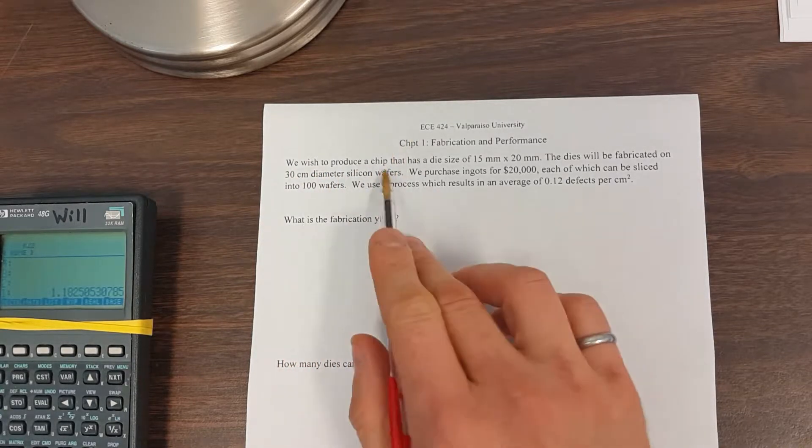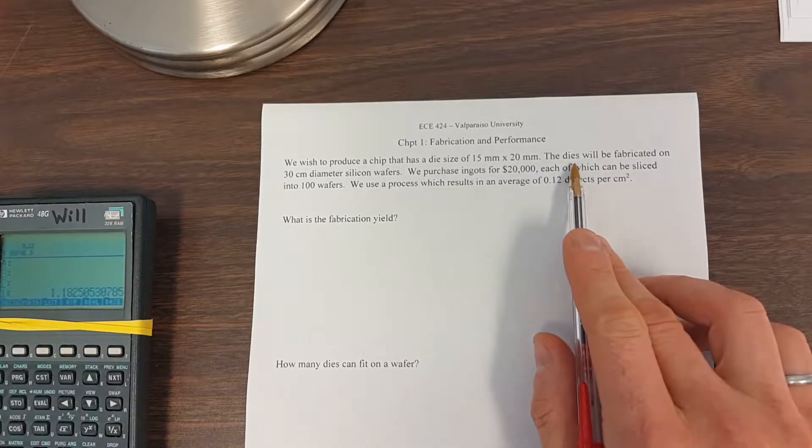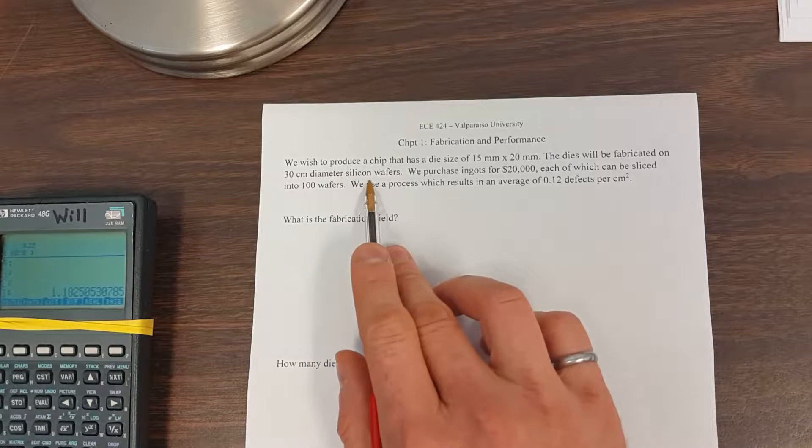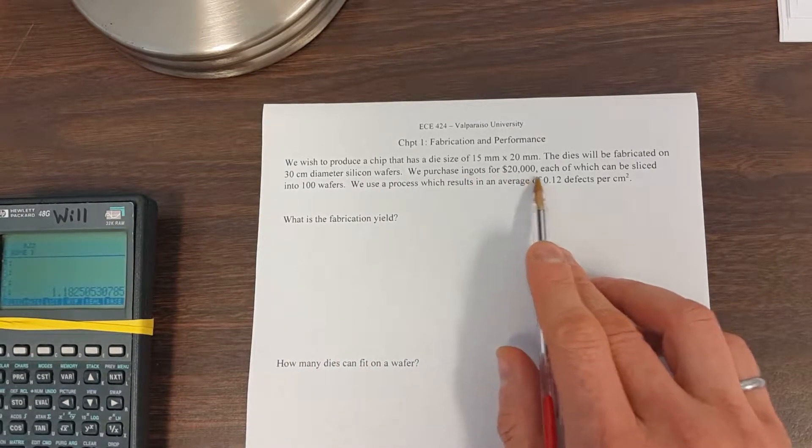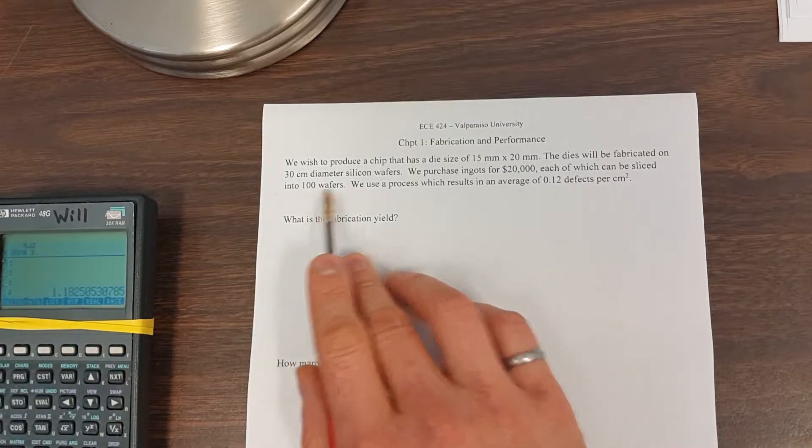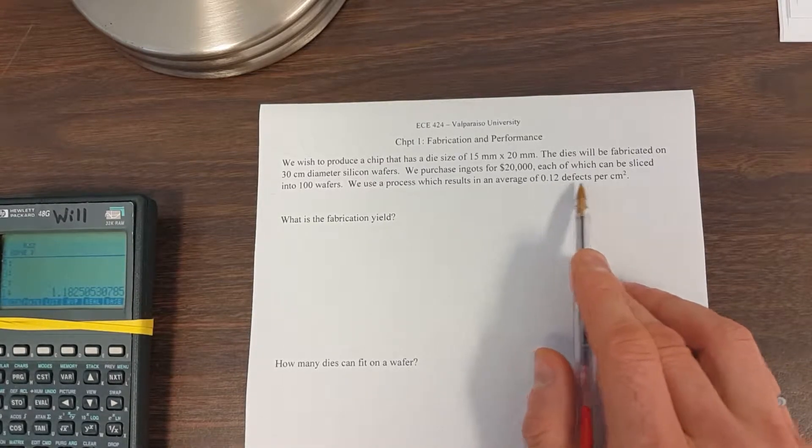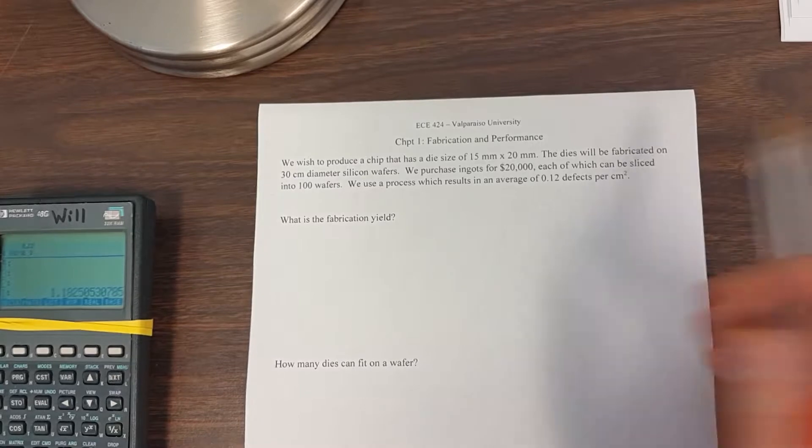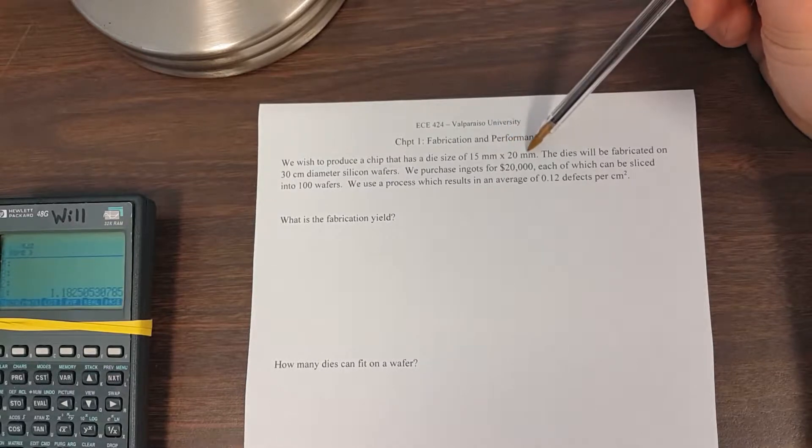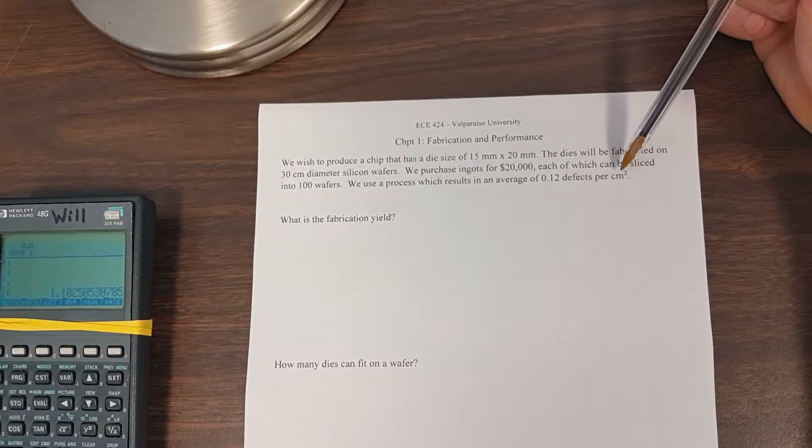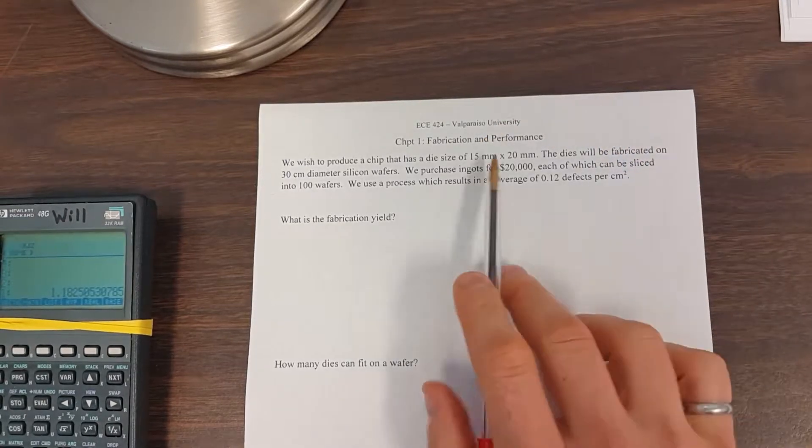we wish to produce a chip or a die that has a die size of 15 millimeters by 20 millimeters. The dies will be fabricated on 30 centimeter diameter silicon wafers. We purchase ingots for $20,000, each of which can be sliced into 100 wafers. We use a process which results in an average of 0.12 defects per centimeter squared. So when we read the problem, initially we want to take note of the fact that the die size is given in millimeters, but the defects are given in terms of centimeters squared. So we'll have to be careful about that.